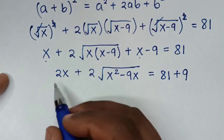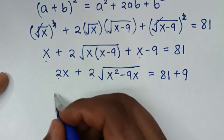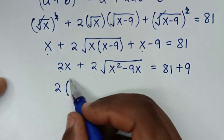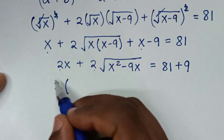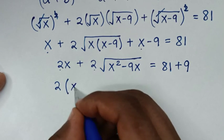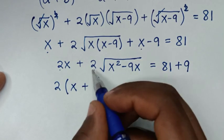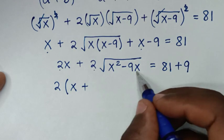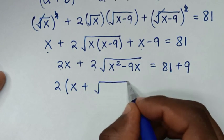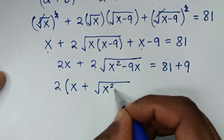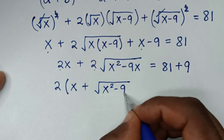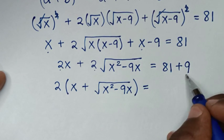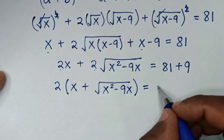Then, 2 is common, so we take 2 out of the bracket. Inside the bracket: 2x divided by 2 is x, plus the 2 cancels, leaving square root of x²−9x. So we have 2 times (x + √(x²−9x)) is equal to 81 plus 9, which is 90.